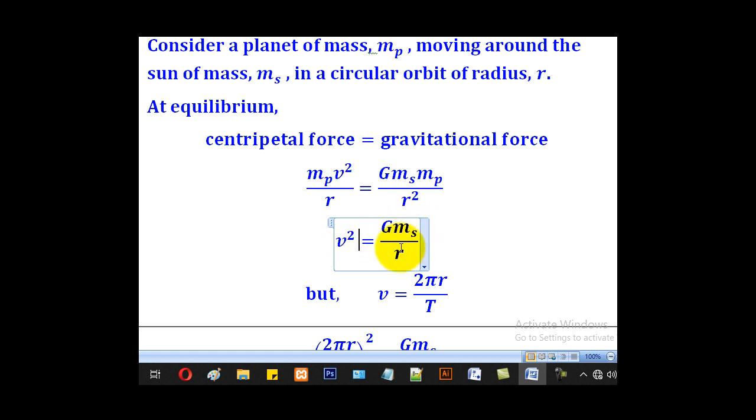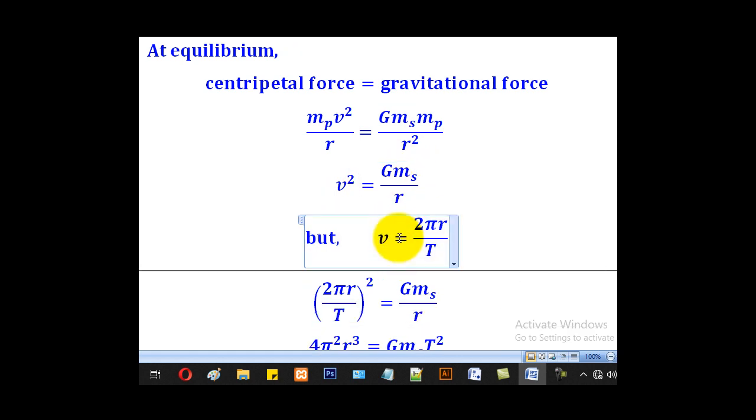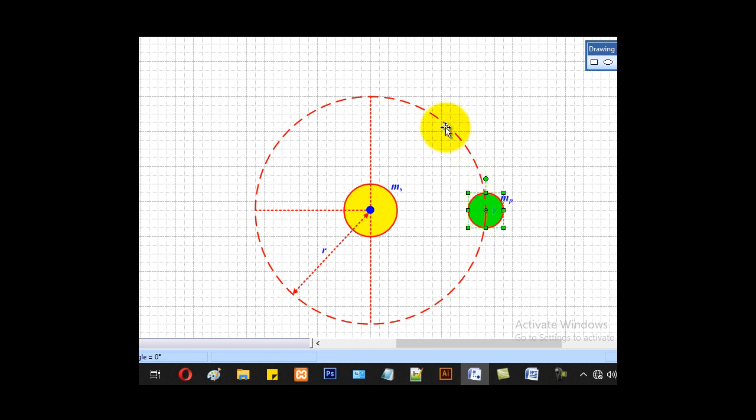But we know that v is the same as distance over time. From here to here, the distance traveled will be equal to the circumference of that path, of that orbit. And the time will be equal to the period of revolution.